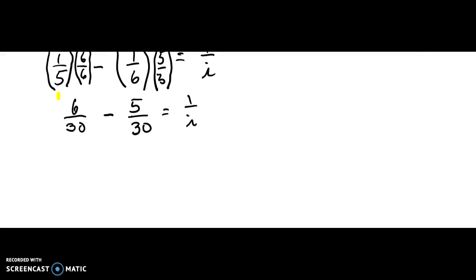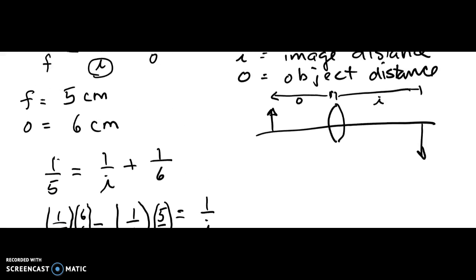Okay, let's keep going. So 6 over 30 minus 5 over 30 equals 1 over 30. And that equals 1 over I. And therefore, if I flip both sides upside down, I'll get I equals 30 centimeters. And that's how you calculate using the thin lens equation.